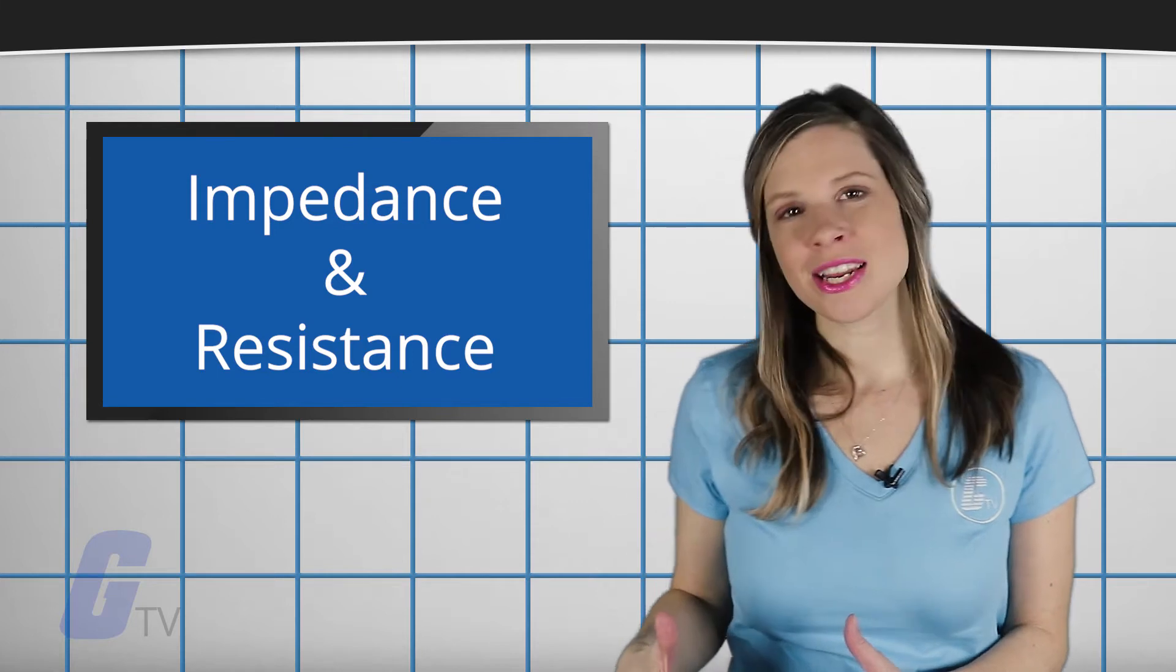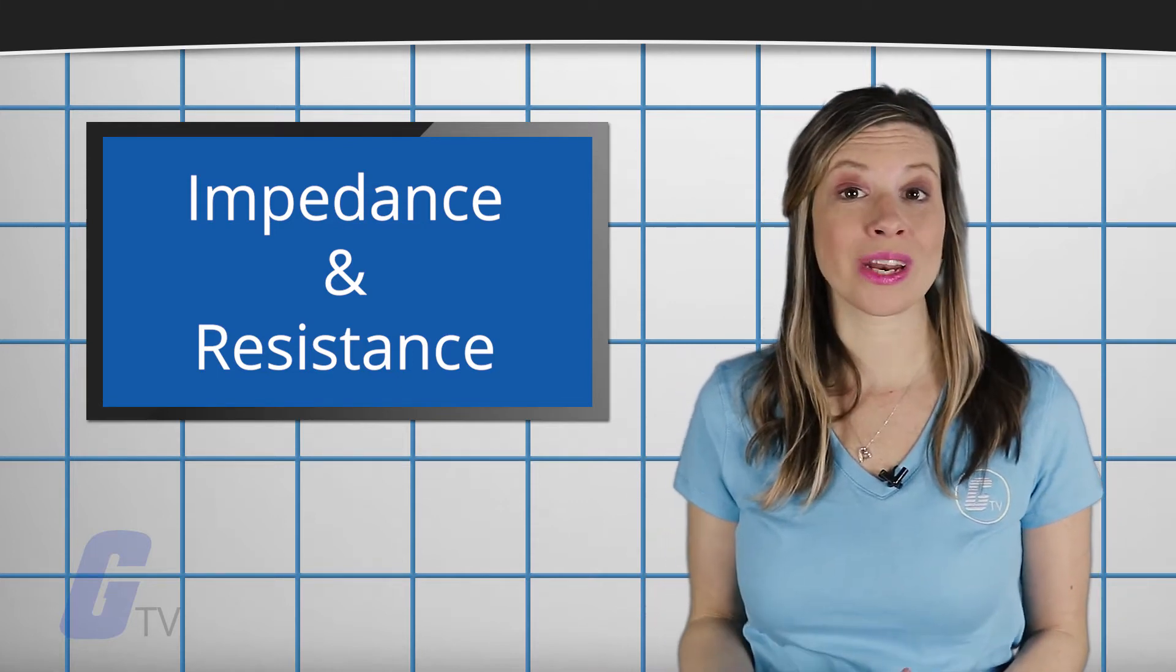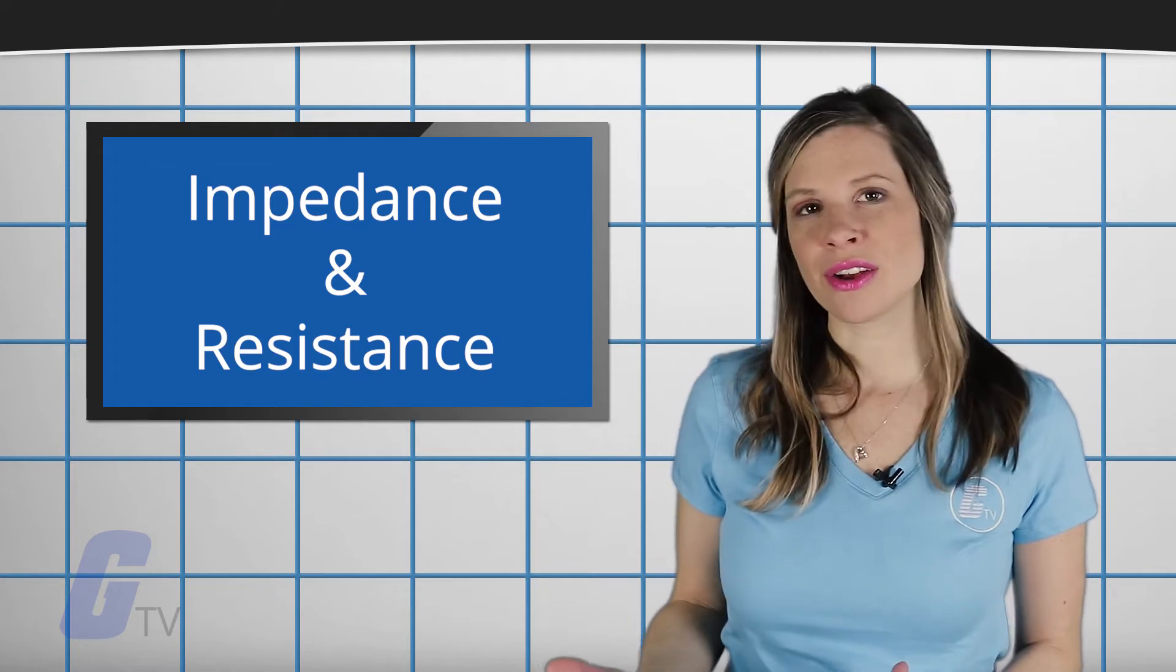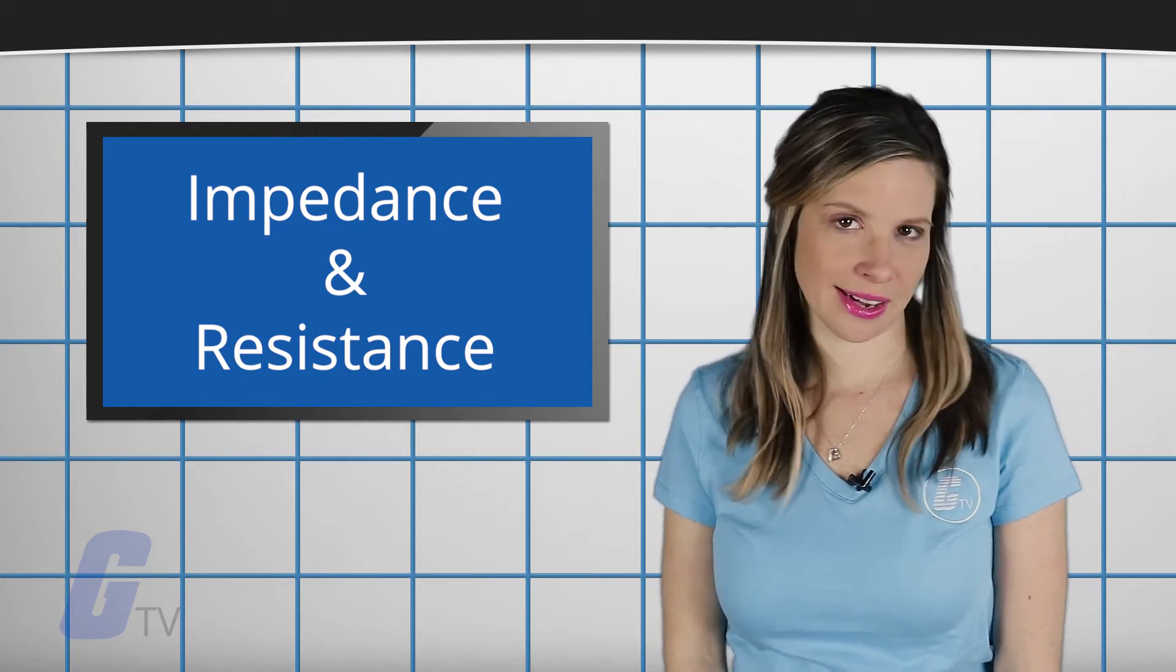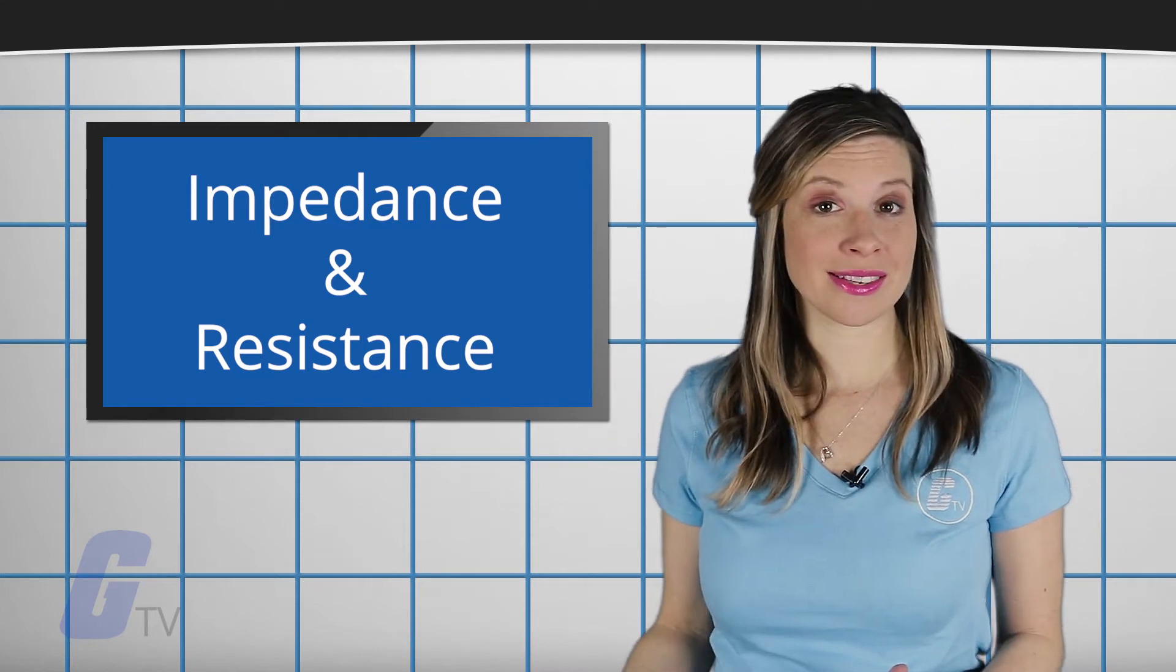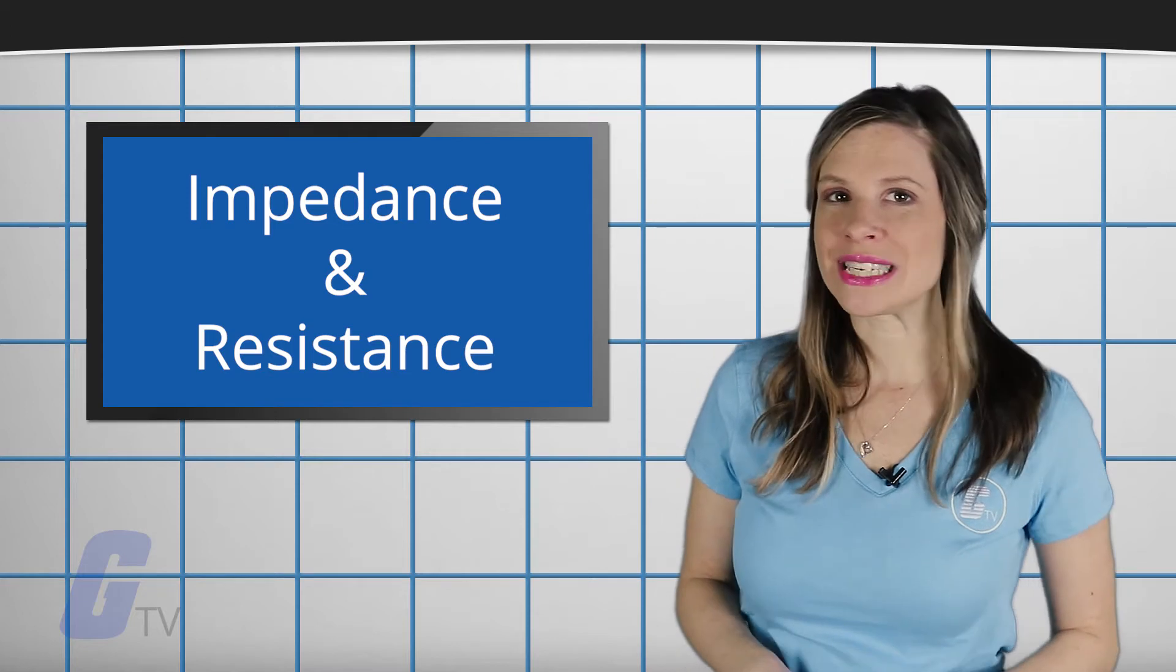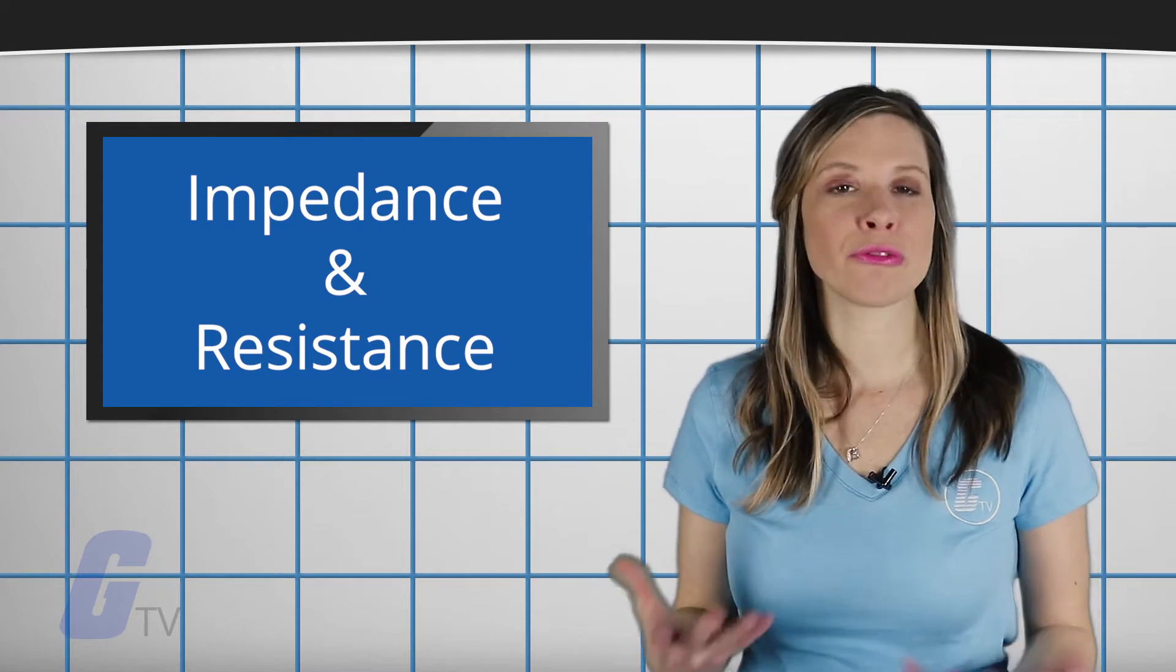However, impedance differs from resistance in that the amount of resistance that a component has to signal varies with the frequency of the signal. This means that the resistance of the component can vary based on the frequency of the signal entering the component, while resistance is independent of frequency.